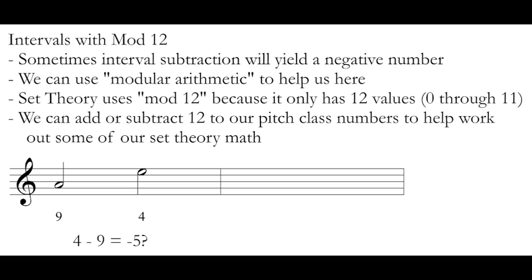But what happens when we have to measure an interval like this? A up to E. If we want to use our arithmetic to measure this and we want to subtract, but 4 minus 9 is negative 5. To figure this out when we have an interval that subtracts below 12, we can use our friend modular arithmetic. Set theory uses what we call mod 12 because it only has 12 numerical values, 0 through 11.